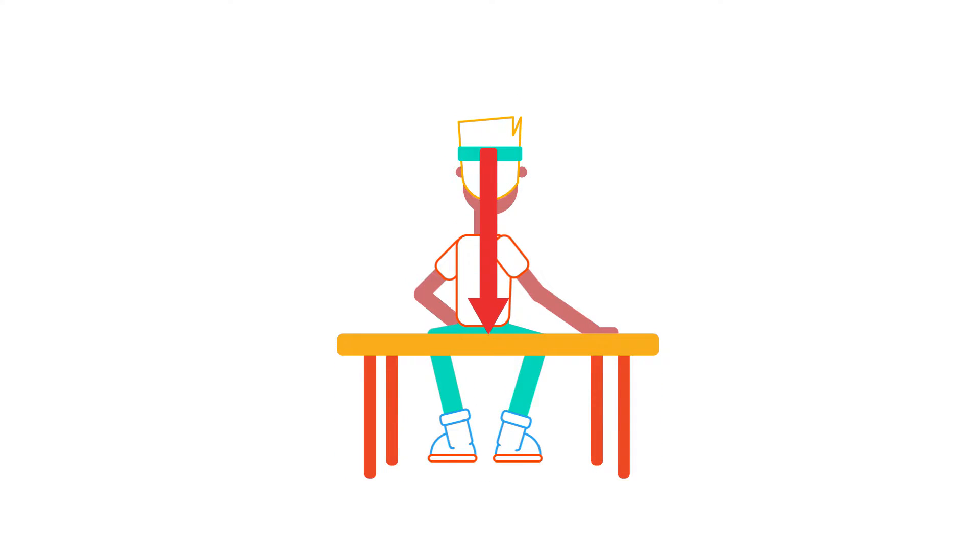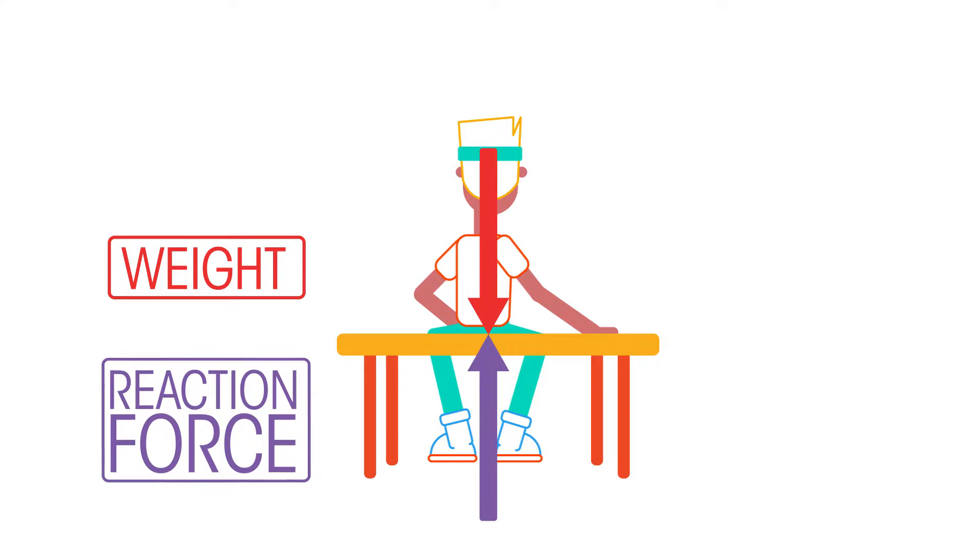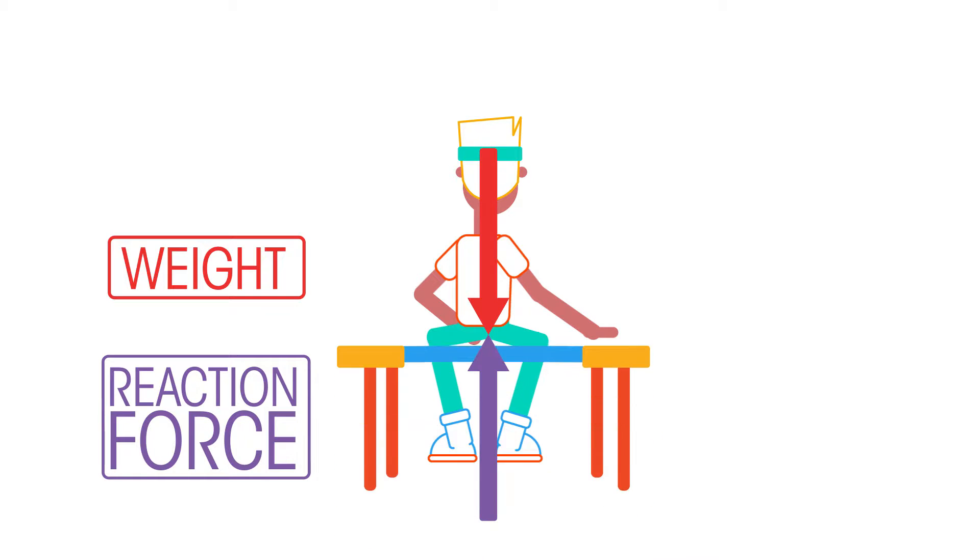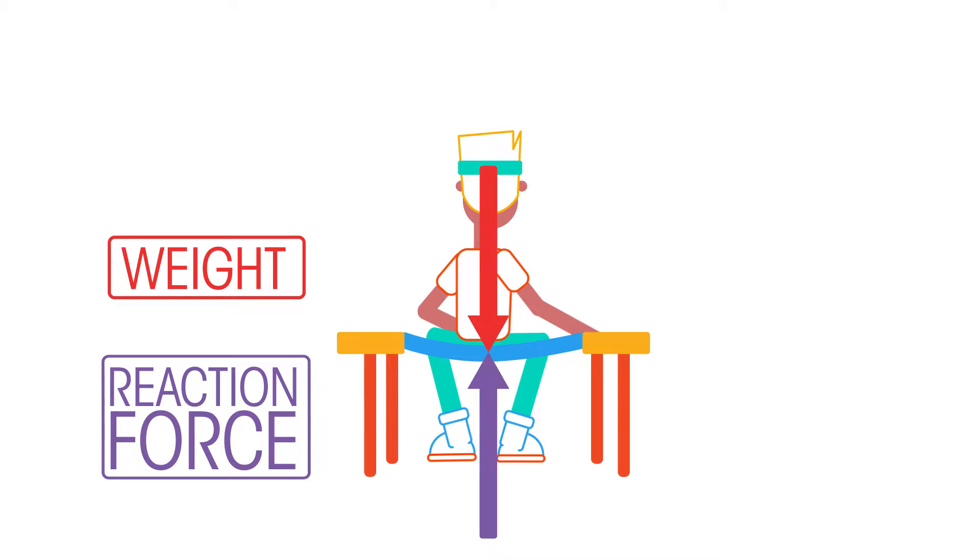Most will spot the downward force of weight but will not consider the force of the chair on the person. It's easier to see this reaction force if she sits on a trampoline instead. However, there are actually two pairs of forces acting here.